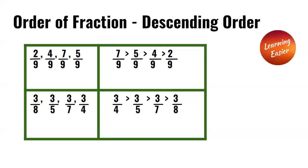Next, we have three over eight, three over five, three over seven, and three over four. Since all fractions have the same numerator but different denominators, the smaller the denominator, the larger the fraction. Four is the smallest denominator, so: three over four is greater than three over five, which is greater than three over seven, which is greater than three over eight.